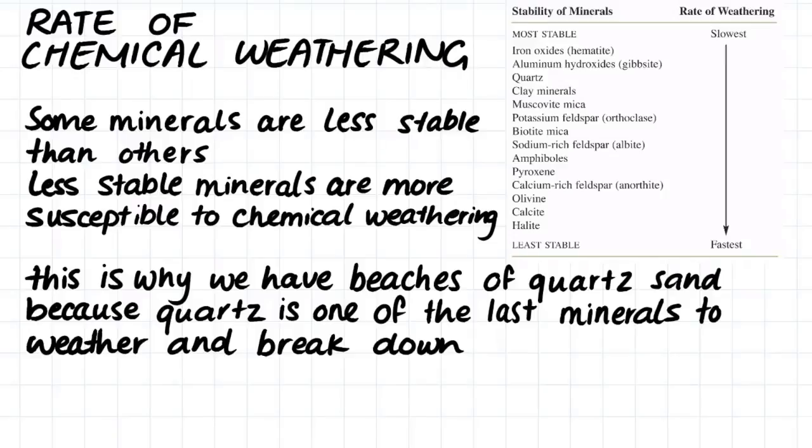Halite, for example, is the least stable and will weather the fastest. While quartz, a mineral that we are familiar with, will weather quite slowly as it is quite a stable mineral. This is why we have beaches of quartz sand, because quartz is one of the last minerals to weather and break down.